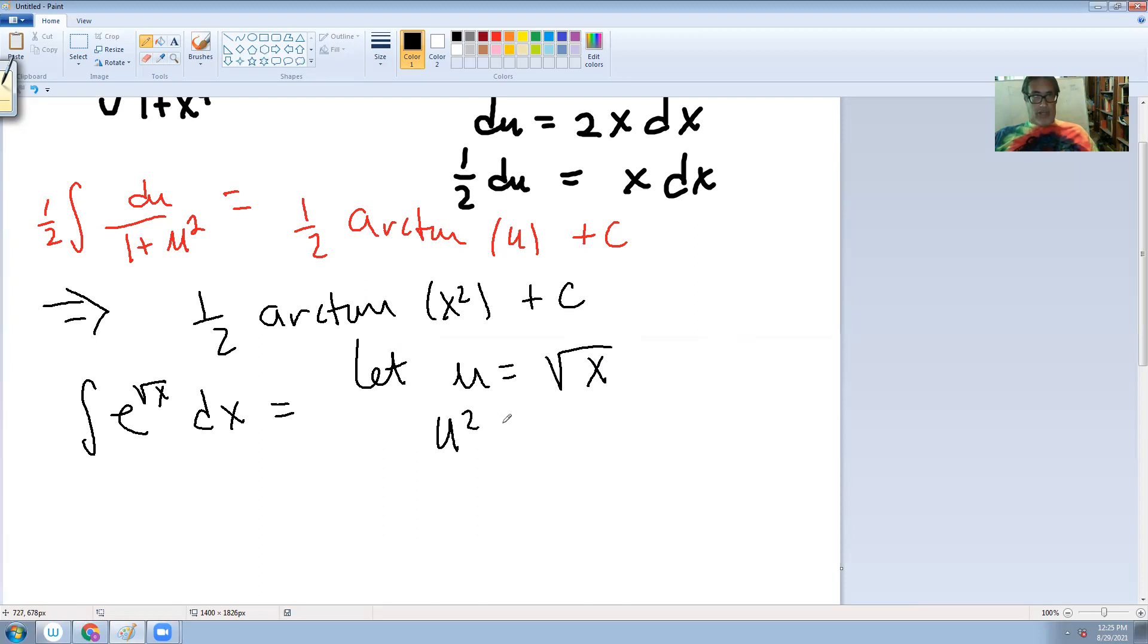So we know now u squared is now x. And then if we differentiate both sides, we get 2u du in differential form.